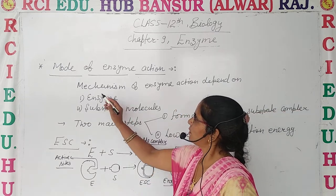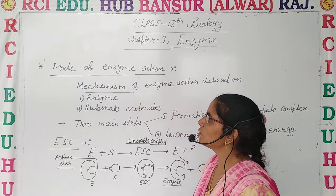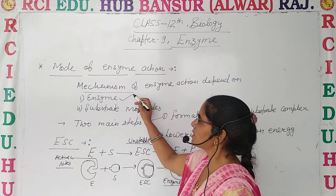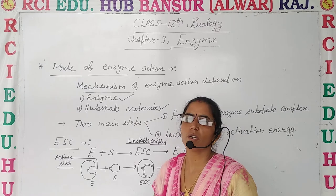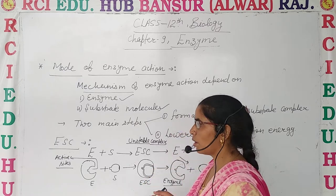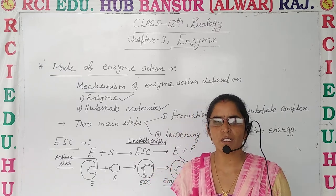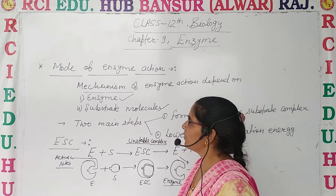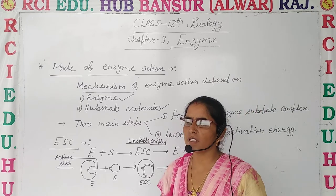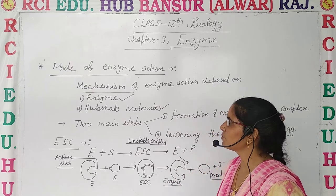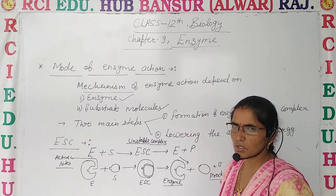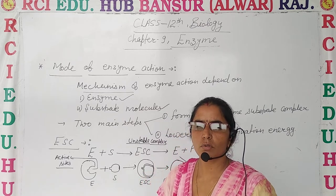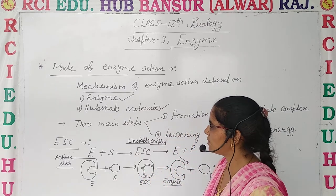The mechanism of enzyme action mainly depends on two things: the availability of the enzyme and the availability of the substrate molecules. If either of them is not present, the reaction cannot proceed. So availability of both enzyme and substrate molecule is very essential to understand the mechanism of enzymes.